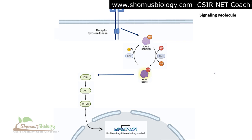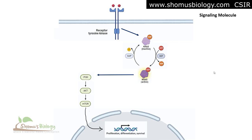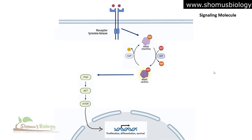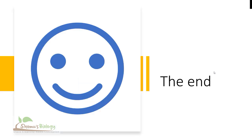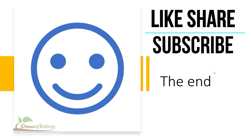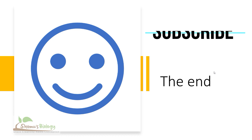The KRAS molecule is the primary activator in the cytosol and further activates transcription factors that lead to cell growth, proliferation, differentiation, and ultimately cell survival. That's all about the KRAS signaling, or protein kinase B signaling pathway, or PI3K-AKT-mTOR signaling pathway. If you like this video, please hit the like button, share it with your friends, and subscribe to this channel to get more videos like this in the future. Thank you.